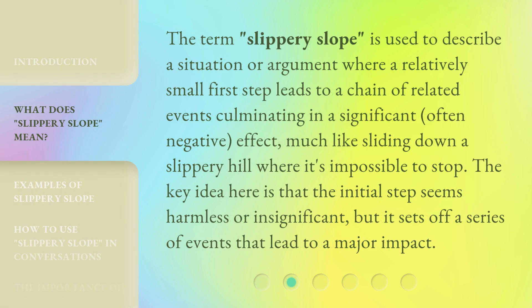The term 'Slippery Slope' is used to describe a situation or argument where a relatively small first step leads to a chain of related events culminating in a significant, often negative, effect — much like sliding down a slippery hill where it's impossible to stop. The key idea is that the initial step seems harmless or insignificant, but it sets off a series of events that lead to a major impact.